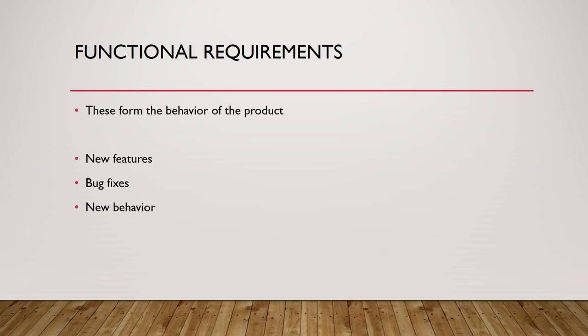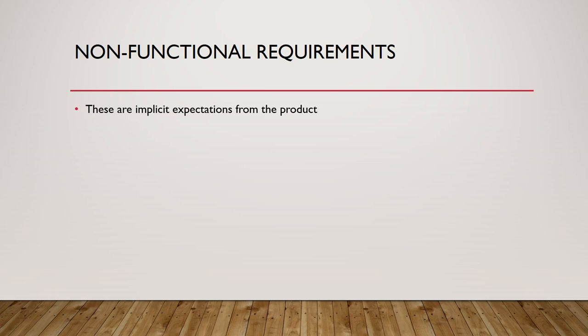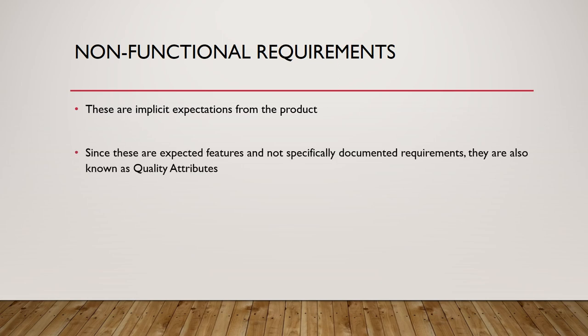Non-functional requirements are implicit expectations from the product. These are not explicitly mentioned requirements — this is where it gets tricky. These requirements might not be explicitly mentioned in your requirements document; they are implicit in nature. Since these are expected features and not specifically documented requirements, you may not have them in your requirements document. These are also known as quality attributes.